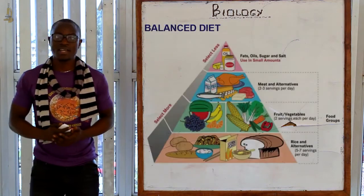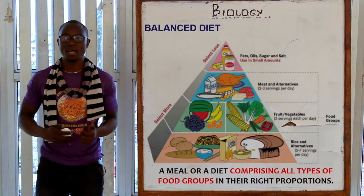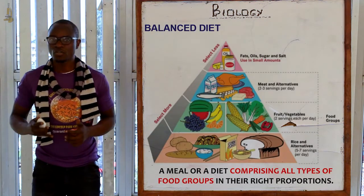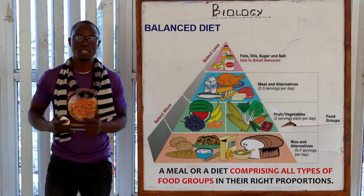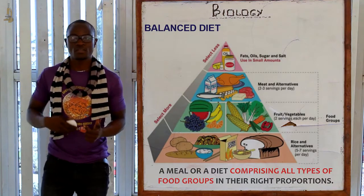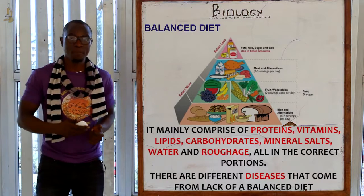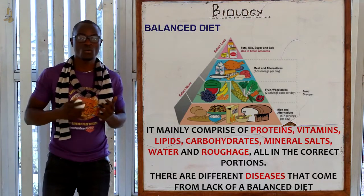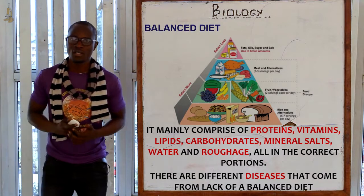Now let's look at balanced diet. What is a balanced diet? A balanced diet is a meal or a diet that consists of all types of nutrients or food in the right proportions. It consists of proteins, vitamins, lipids, carbohydrates, minerals, and water.